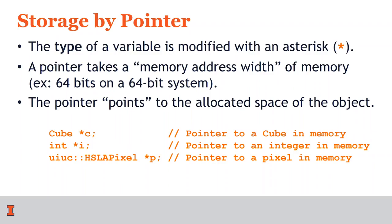You've also seen us storing things by pointer. We introduced the idea of a pointer when we started talking about heap memory. The type of a pointer is the type of the object modified with an asterisk, and a pointer takes on the memory address of another piece of data. The exact length of that memory address is the memory address width of the system — on a 64-bit machine, the memory address is 64 bits long. A pointer simply points to the memory allocated for the object, denoted by the star, whether it's a cube, integer, or HSL pixel.